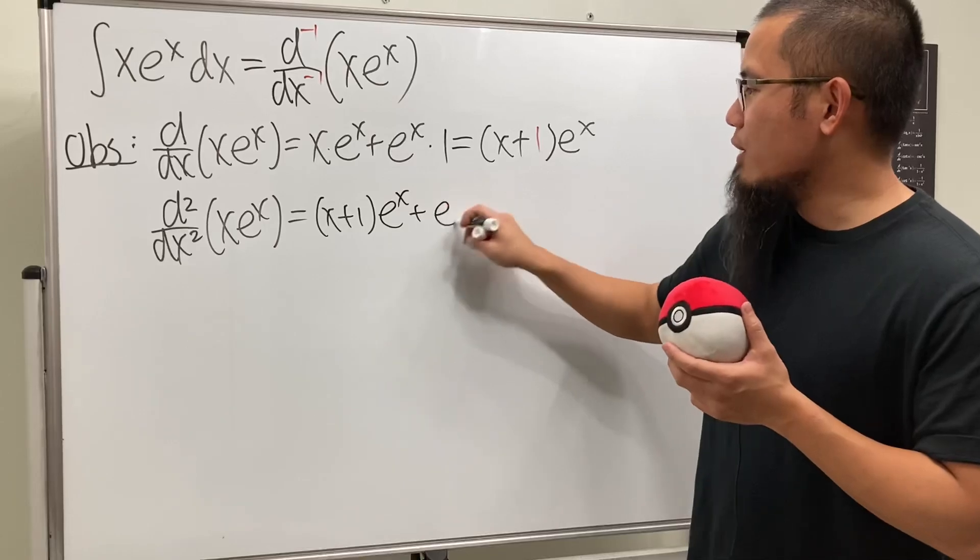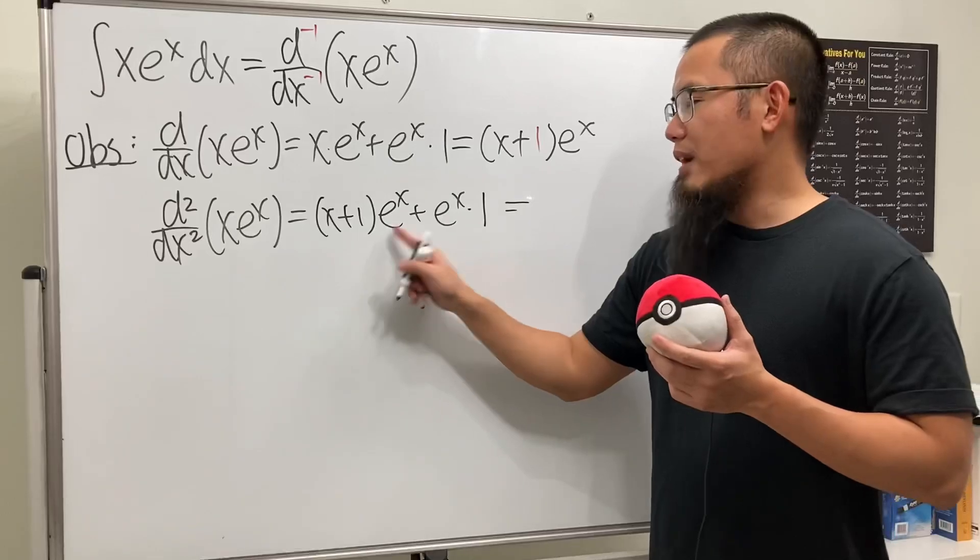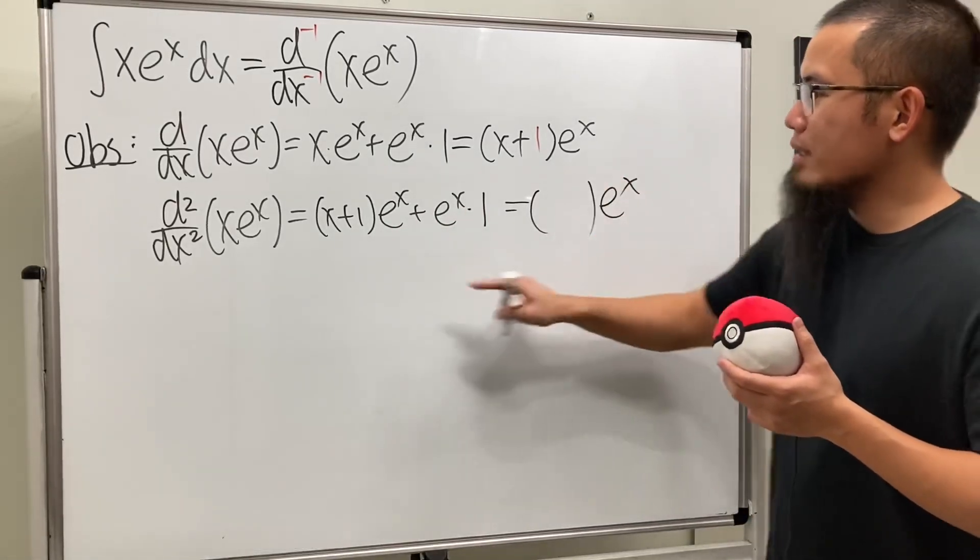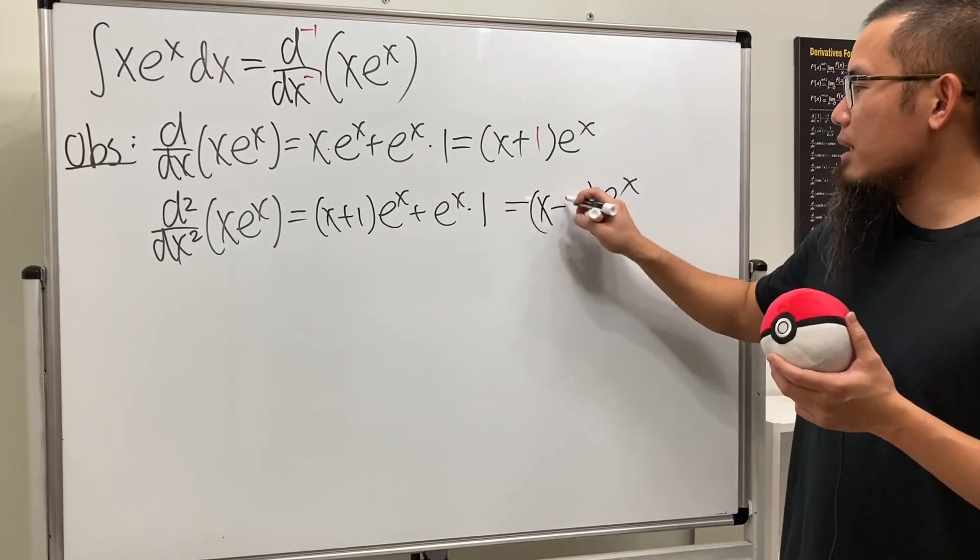And we add the second function times the derivative of the first, which is just 1. Have a look. We can factor out e^x again. And we see what? x+1 plus another 1, so this is x+2.